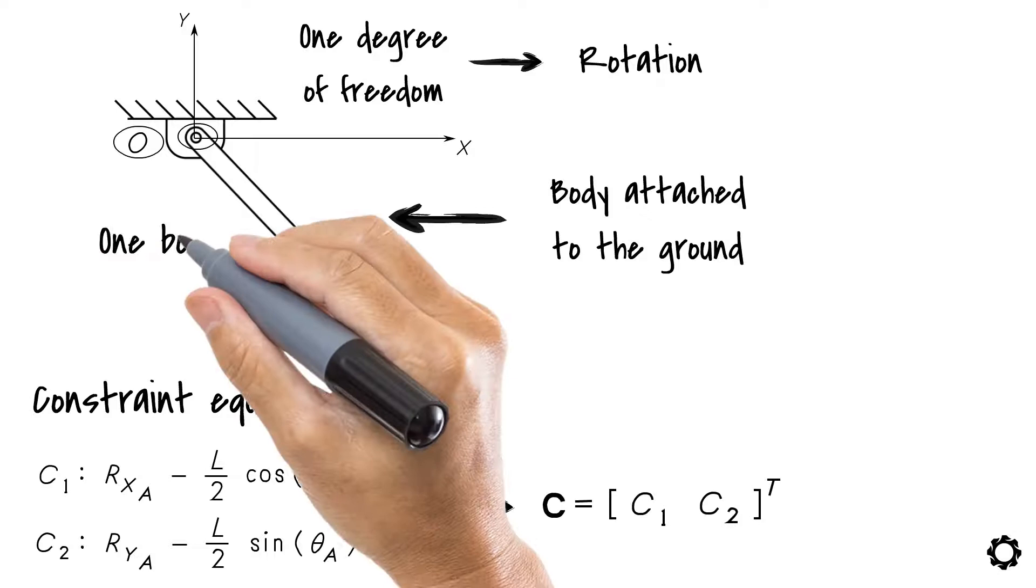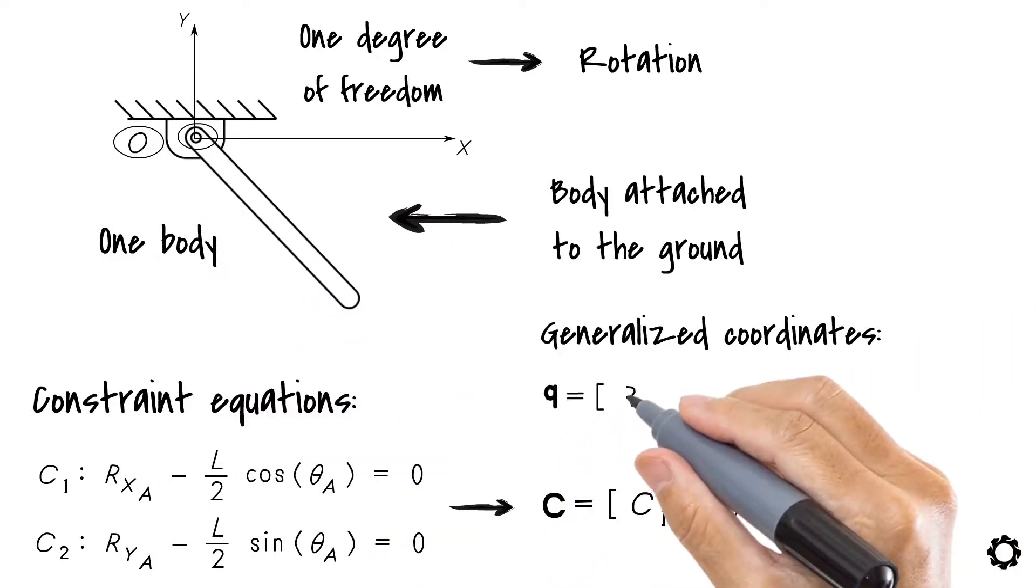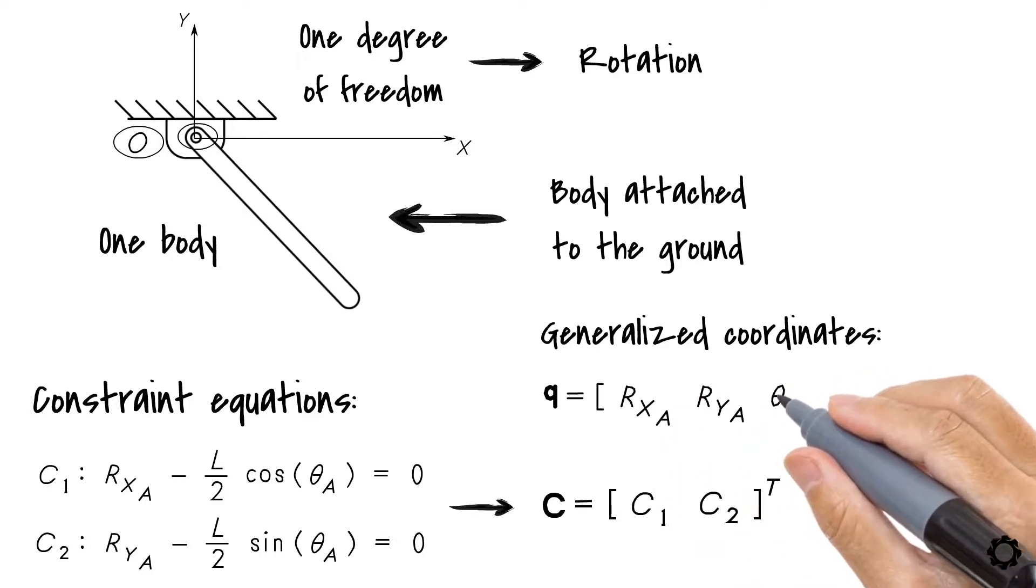As we have one body, our generalized coordinates for this planar mechanism are Q equals Rxa, Rya, theta A transpose.